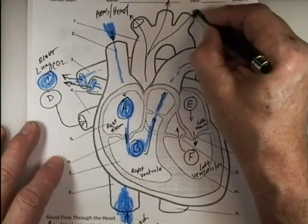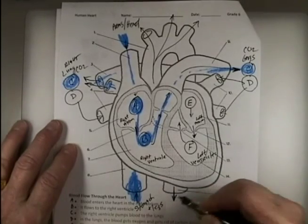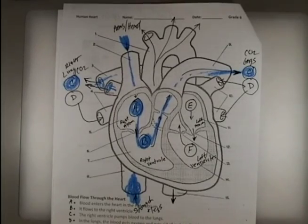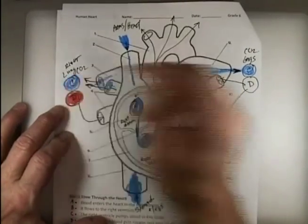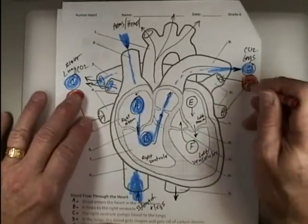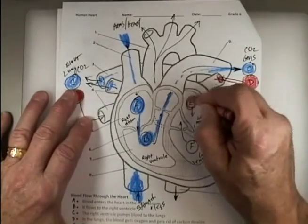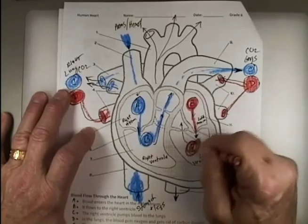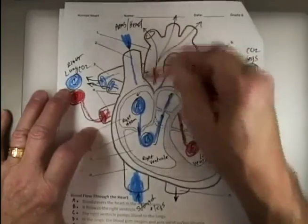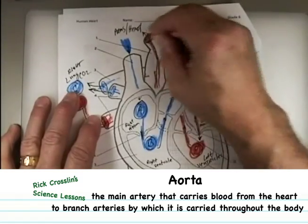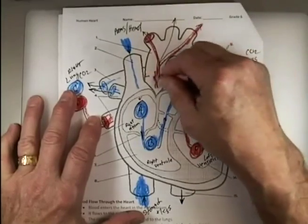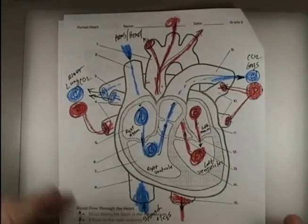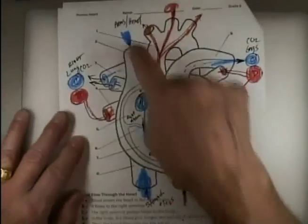Now it's not over — we've got to get that blood back to the body. It goes up through the valve and comes up through the arms, head, the other arm, and comes down to the stomach and legs. Then it goes to the tiny capillaries and the whole thing starts over. The blue picks up oxygen in the lungs and turns red, goes back into the left atrium, down to the left ventricle, and is pushed up through the aorta to the arms, head, and body.